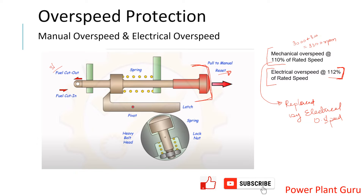The mechanical overspeed trips by cutting fuel in a gas turbine or steam in a steam turbine. Basically, it opens a trip oil drain so that the trip oil circuit is emptied out, causing the main stop valve or ESV to close. The ESVs are held open against that oil pressure, so if the oil is drained, the trip valves close — or in a gas turbine, the fuel stop valve closes.